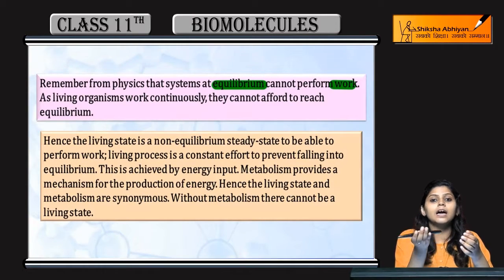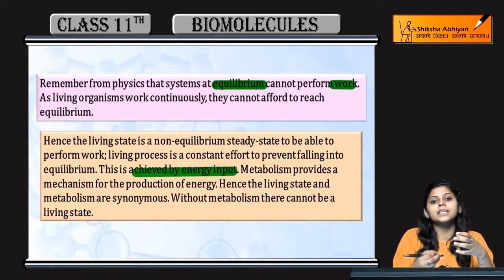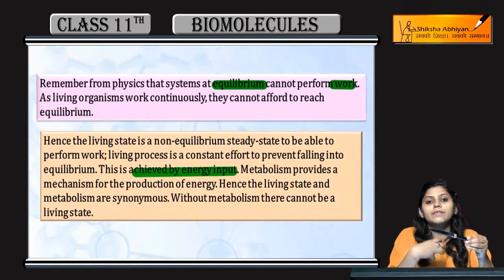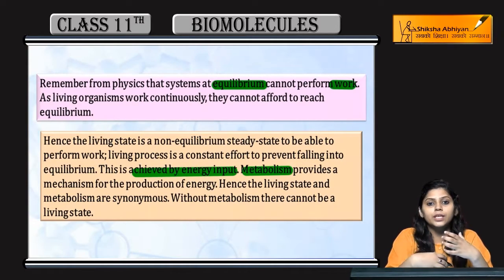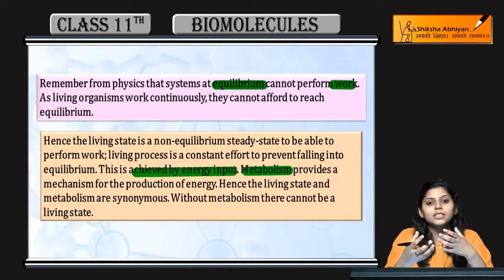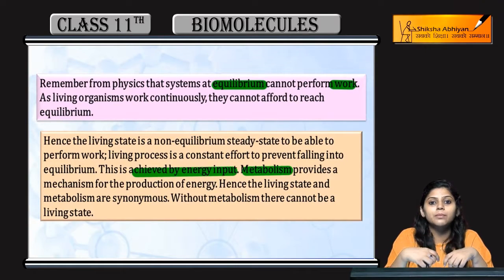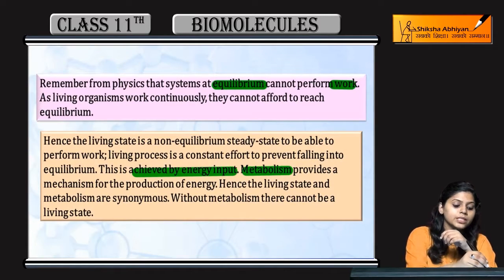Living organisms require energy as input. This energy comes from metabolism occurring in our body. Energy is in the form of ATP — adenosine triphosphate. This ATP comes from the metabolic processes happening in the body; for example, when we eat food, the degradation of that food is also metabolism, and we get energy from it.